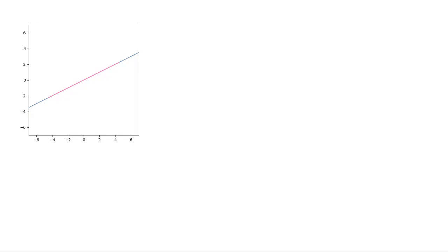Let us continue. Now let's say we have a matrix given by (2, 1; 4, 2). So now our e1 is being sent to the vector (2, 1) and our e2 is being sent to (4, 2). And now we have a very different picture at hand. Rather than having a two-dimensional plane, now we just have a line. So even though the input was two-dimensional, the output was one-dimensional. This is pretty fascinating, and we see that our ellipse has now become a line as well.